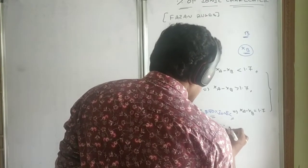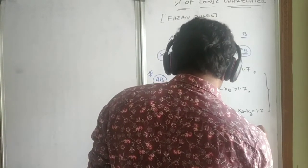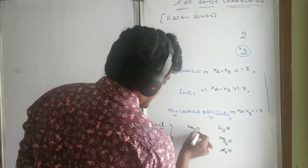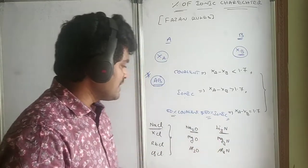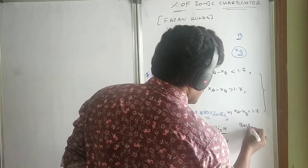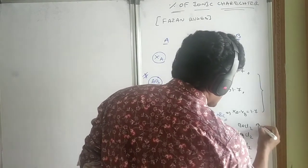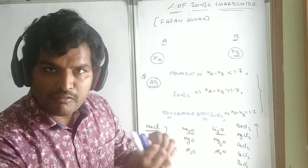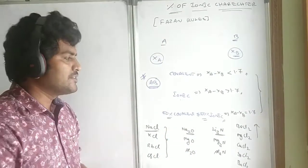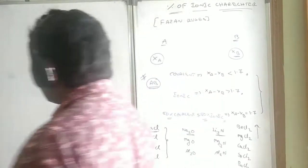Let us take lithium nitride, magnesium nitride, and aluminium nitride. We can compare NaCl, Na₂O, and Li₃N. Whenever you compare compounds like these — magnesium oxide and magnesium nitride, and Group 2 elements: beryllium chloride, magnesium chloride, calcium chloride, strontium chloride, and barium chloride — how to identify which is more ionic and which is more covalent. To find the percentage of ionic nature of any compound, we can use a formula.